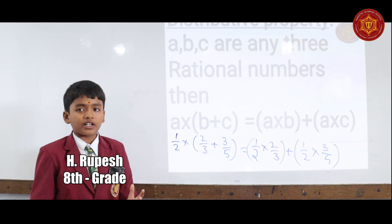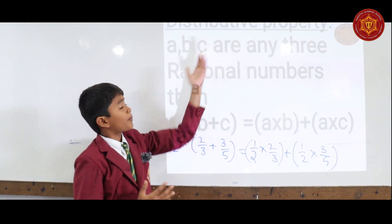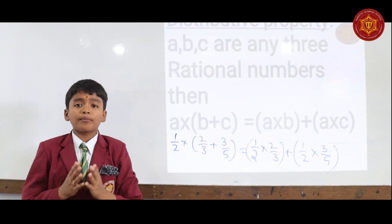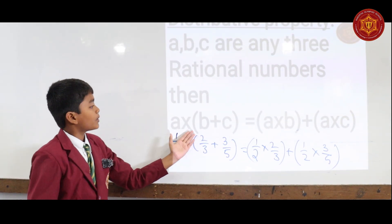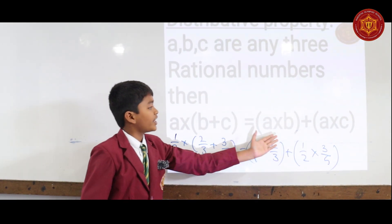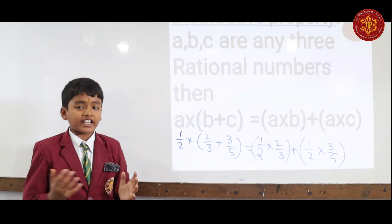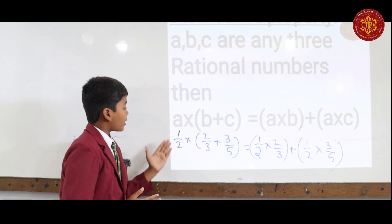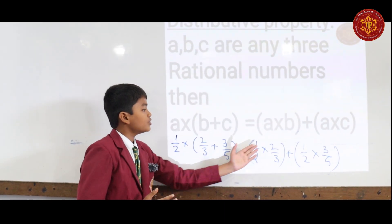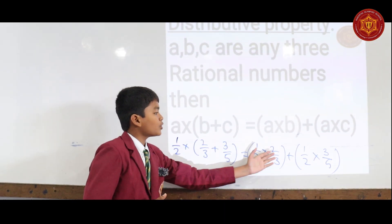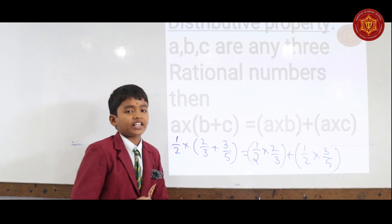Now, I would like to explain the concept of distributive property. If A, B, C are any three rational numbers, then A into (B plus C) equals A into B plus A into C. For example, 1/2 into (2/3 plus 3/5) equals 1/2 into 2/3 plus 1/2 into 3/5. Thank you.